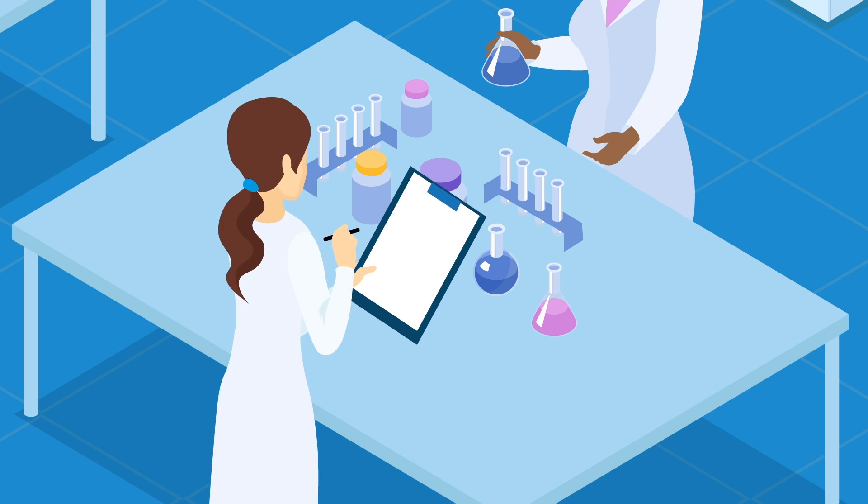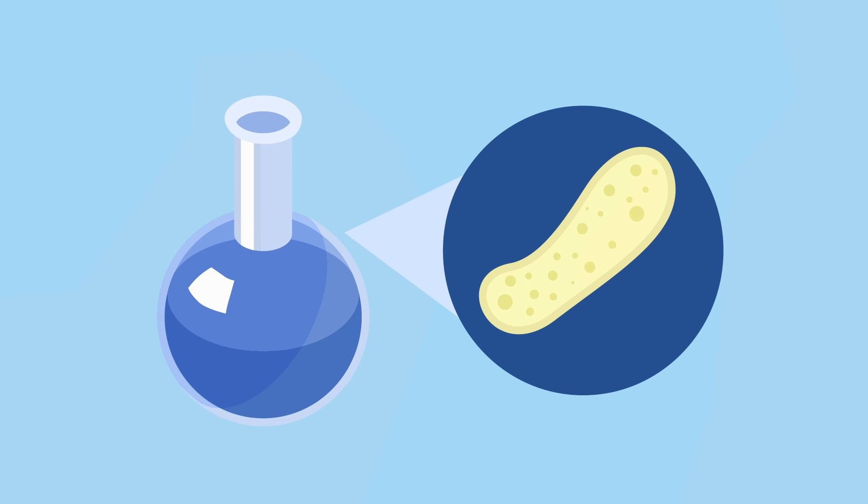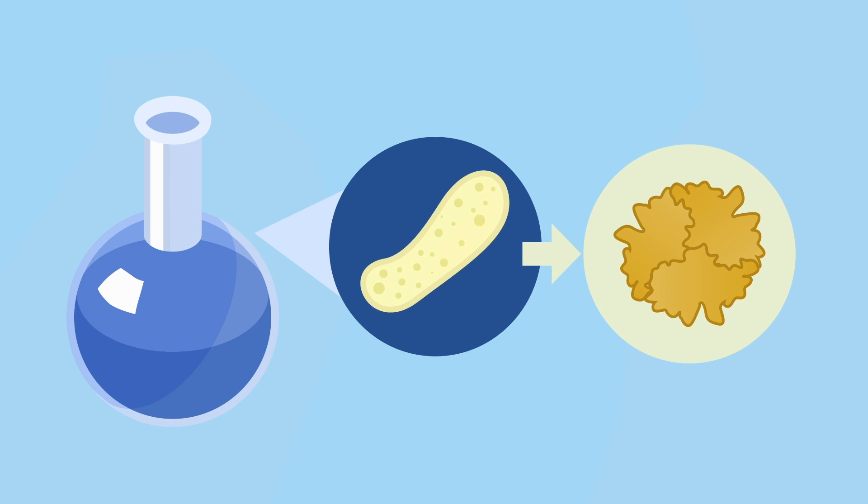These recombinant proteins are commonly produced inside bacteria, as these simple single-celled organisms are relatively quick and easy to grow and allow rapid scale-up to industrial levels of production.